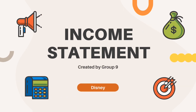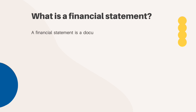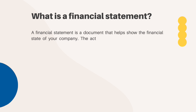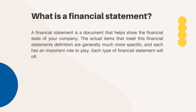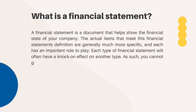In this video, we are going to talk about the income statement. Before we get into the topic, let's understand first what is a financial statement. A financial statement is a document that helps show the financial state of your company. The actual items that meet this financial statement's definition are generally much more specific and each has an important role to play. Each type of financial statement will often have a knock-on effect on another type.